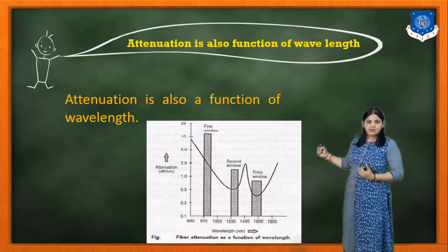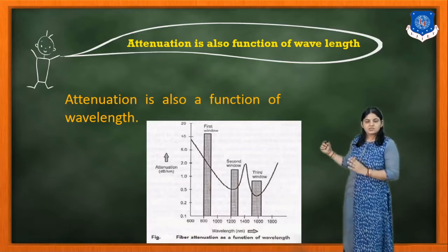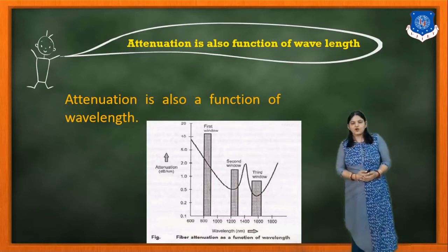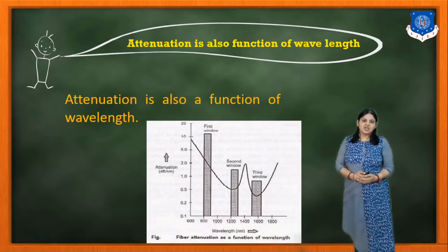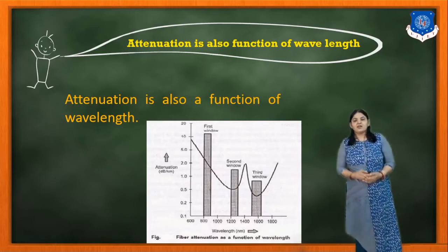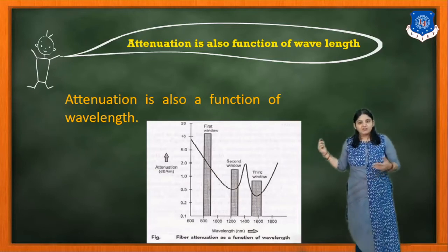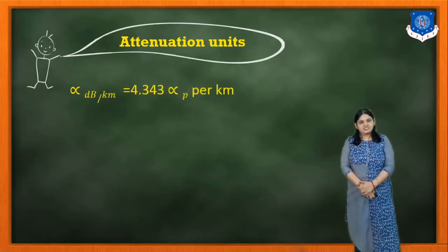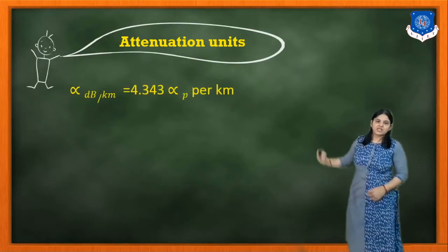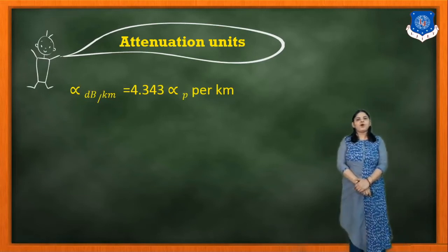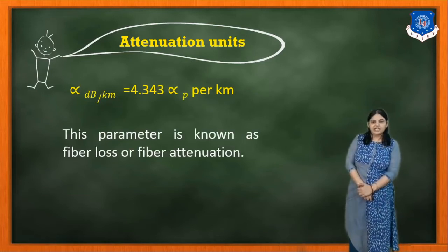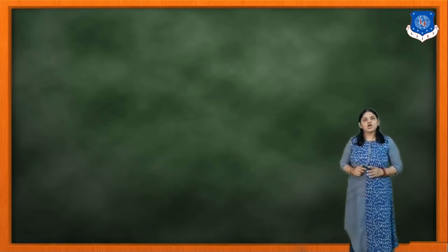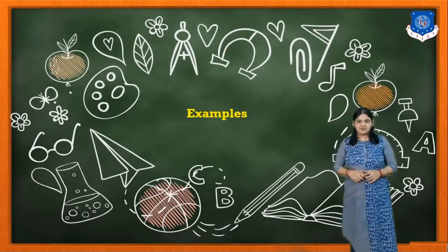The attenuation has a first window, second window, and third window. The particular window needed for transmission is selected based on wavelength — wherever the attenuation is less, that window is selected. The α(dB/km) = 4.343 × αP per kilometer, and this parameter is known as the fiber loss or fiber attenuation.